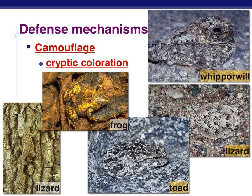Going back to defense mechanisms — one classic kind of camouflage is cryptic camouflage, where you really just blend in. At a quick glance, whatever is trying to eat you may not see you because you blend so well with your surroundings. Examples include a whippoorwill bird, a lizard, a frog or toad, another frog, and a lizard from before. If you were looking at these animals from above or further away, it would be very hard to see them.